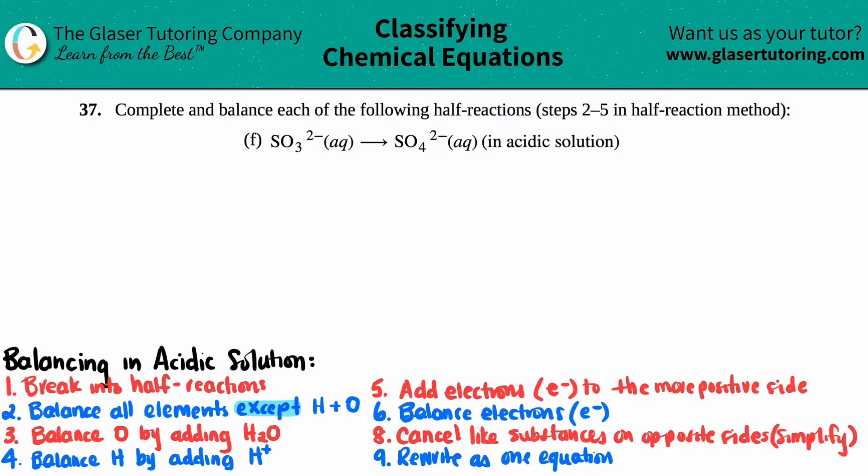Number 37, complete and balance each of the following half reactions, which is steps two to five in the half reaction method, and then we have letter F.